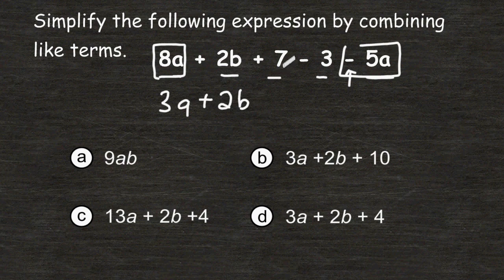When you have a number all by itself, and it is not sitting next to any variable, that is called a constant. And all constants are like terms. So we have 7 right here, and we are taking 3 away from 7, which leaves us with a total of 4.